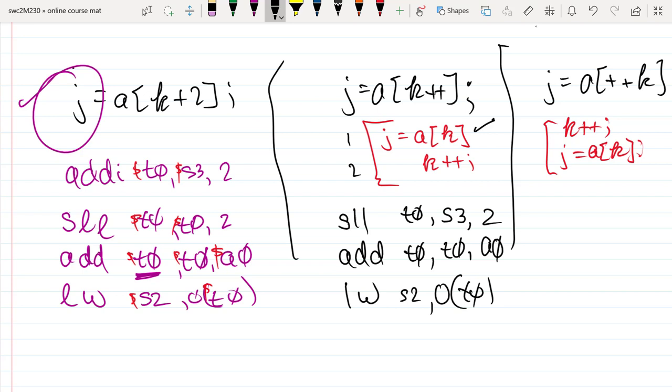And then we can't forget that we needed to do our k plus plus, which is just simply add immediate. So k equals k plus 1. And that's going to be S3, S3, and 1.